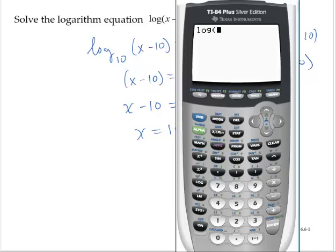But we can, of course, check that. Log of 1,000 is 3, so it does check out.